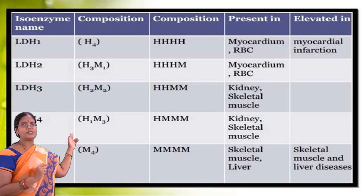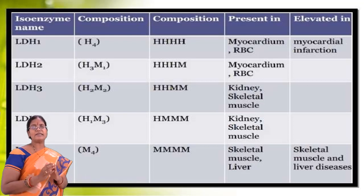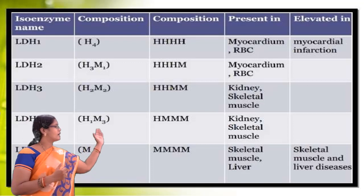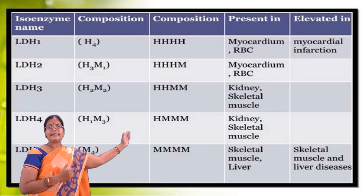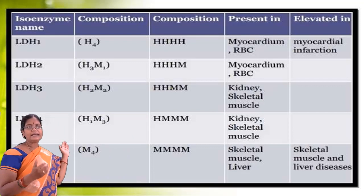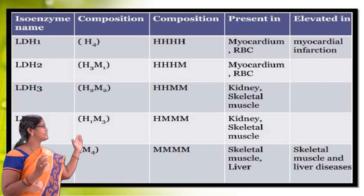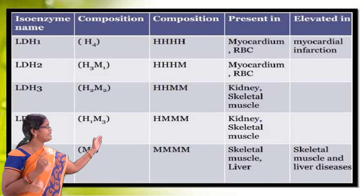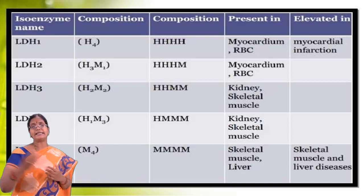LDH3 is equally composed of 2 heart subunits and 2 muscle subunits, represented as H2M2, and is mainly seen in kidney and skeletal muscles. LDH4 has 1 heart subunit and 3 muscle subunits, represented as H1M3, and mainly exists in kidney and skeletal muscle.